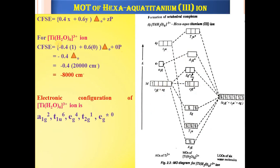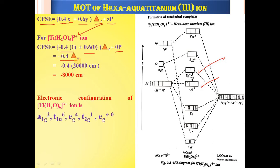Next we will calculate the CFSE (Crystal Field Stabilization Energy) value for [Ti(H₂O)₆]³⁺. For an octahedral complex, CFSE is calculated using the formula: CFSE = (−0.4 × number of electrons in T2G) + (0.6 × number of electrons in EG) × ΔO + Z × pairing energy. In this case, there is 1 electron in T2G and 0 electrons in EG, and no pairing energy, so CFSE = −0.4 × 1 × ΔO.